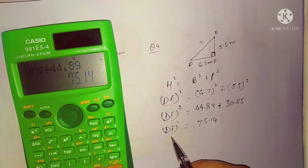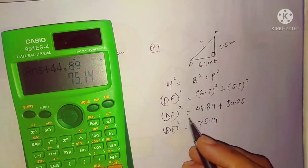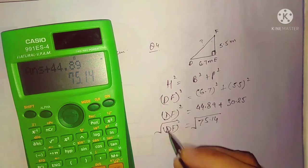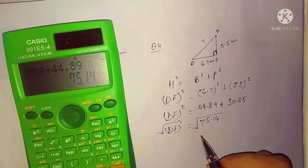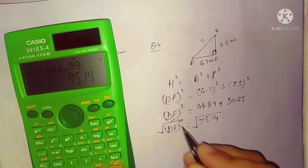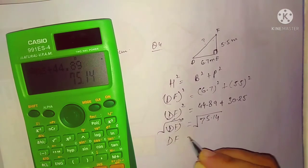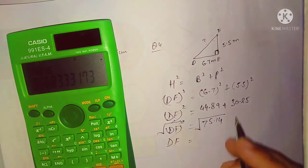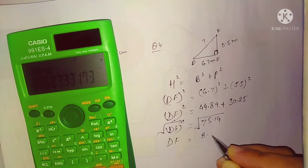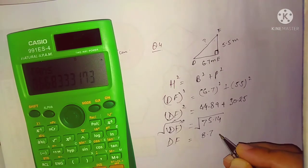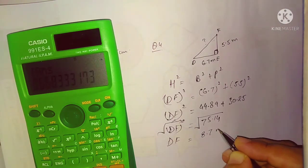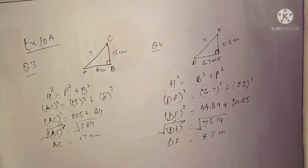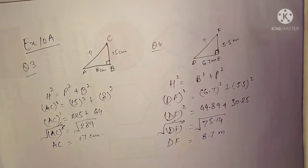We just need DF, so to eliminate the square take the square root on both sides — square root and square cut each other. DF equals the square root of 75.14, which is approximately 8.6, or if you round off, 8.7 meters. I hope question number four is clear. Now let's move to question number five.